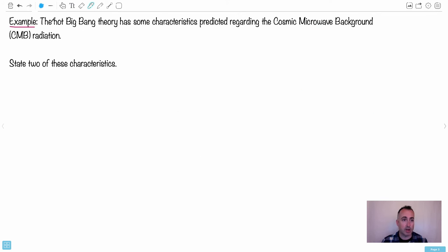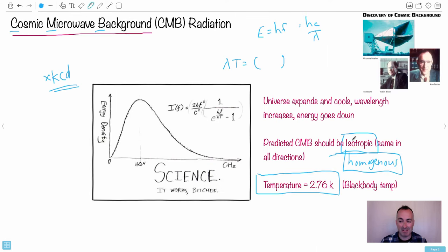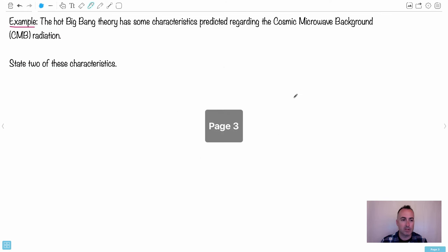So here's an example from an exam question. So the Hot Big Bang Theory has some characteristics predicted regarding the CMB. State two of these characteristics. Well, we could state any of these three. Isotropic, homogenous, or temperature. So maybe we could say that. We could say peak temperature. Remember, because that's the wavelength here. That's a lambda max corresponding to a temperature of 2.76 degrees Kelvin. That could be one of them. If you're supposed to do two, you could do that. You could do isotropic, which means same in all directions, or you could say homogenous. Any of these two would work. So in that sense, it's pretty easy. It's not that hard. So the questions they're going to ask you are fairly straightforward, but what they mean is super deep and actually really interesting.